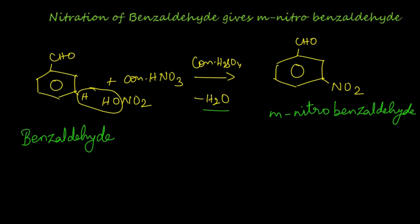Let's summarize the reaction. When benzaldehyde reacts with a mixture of concentrated nitric acid and sulfuric acid, a water molecule is eliminated and this NO2 will get attached to this meta position, and we get meta-nitrobenzaldehyde as the product. Thank you.